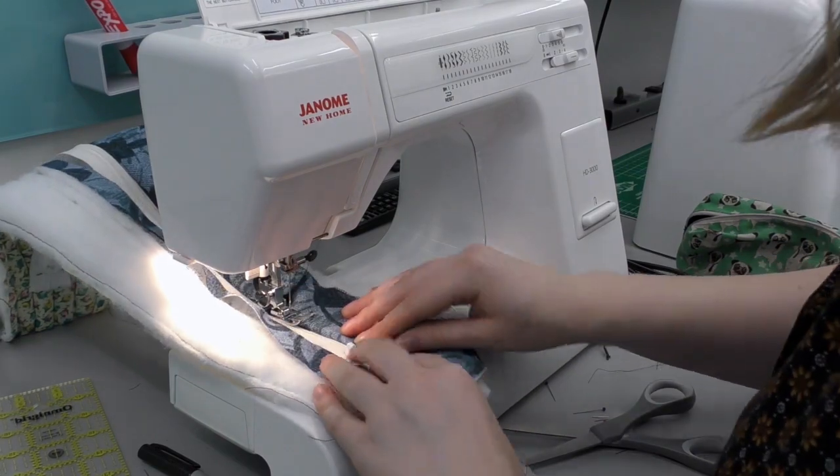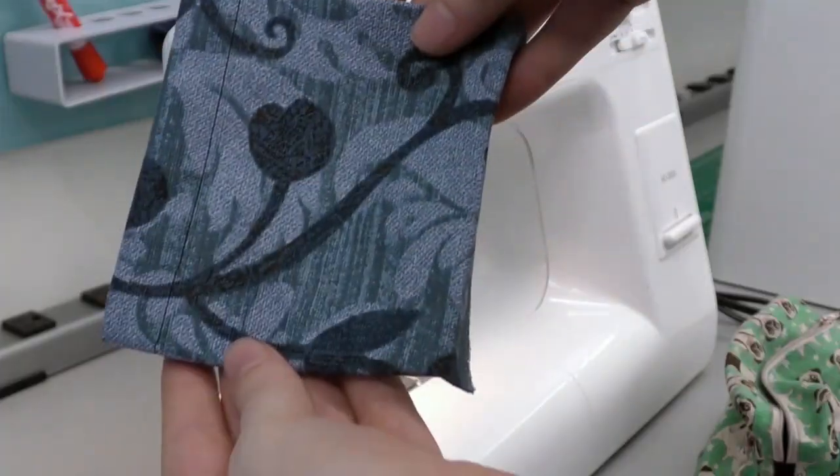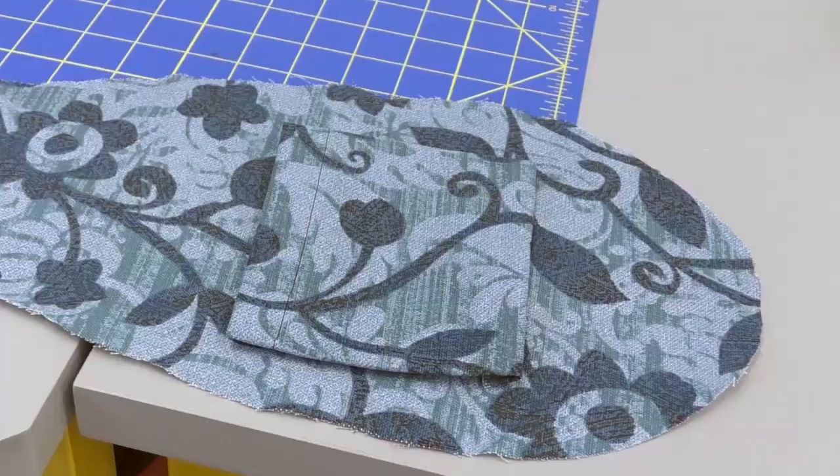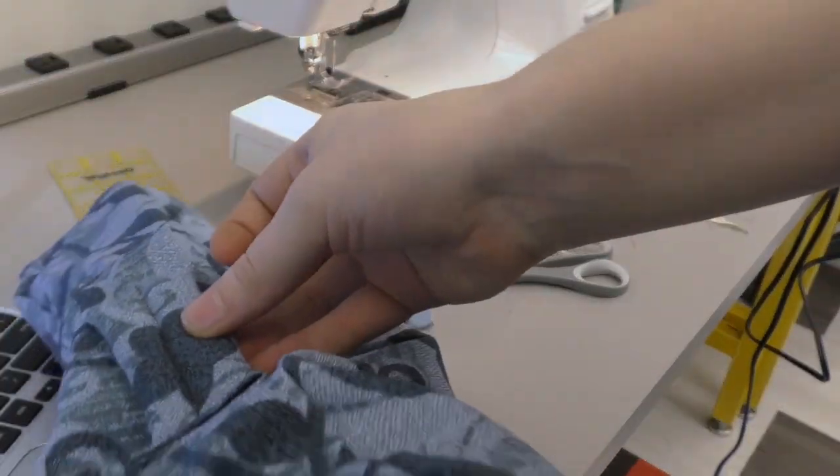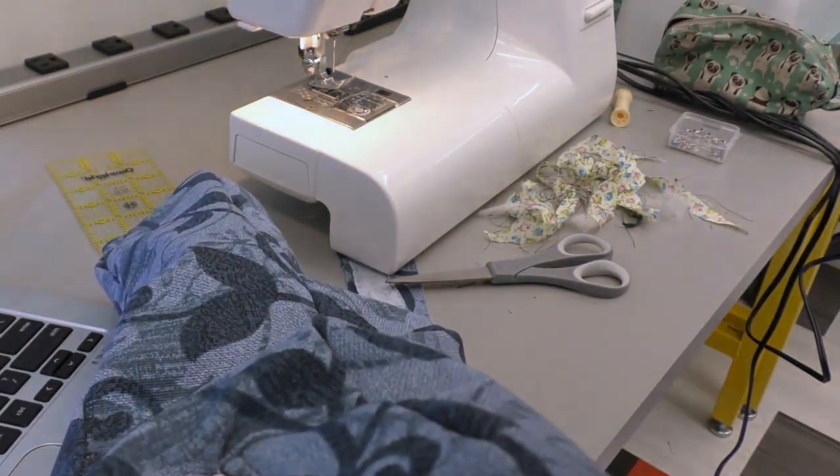Now would be a great time to attach any pockets or straps to your outer fabric before you attach it to anything else. I sewed down one side of a square and then folded down the other three and attached it to the front to become a pocket. I used to handle by sewing a tube and stuffing some batting in it but I forgot to attach it to the very end so I kind of just gave up.